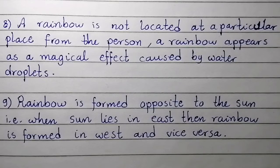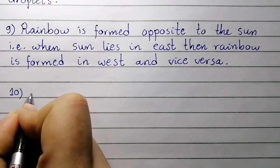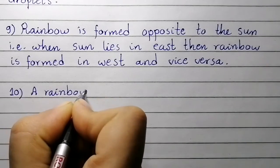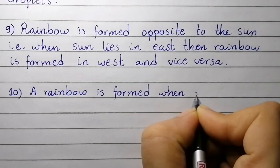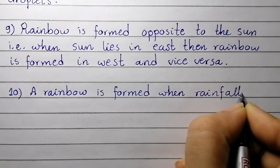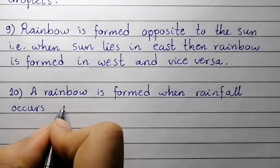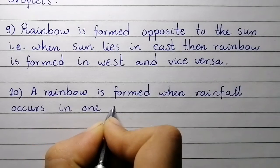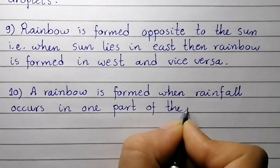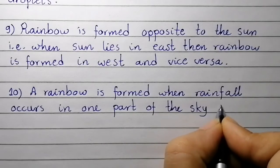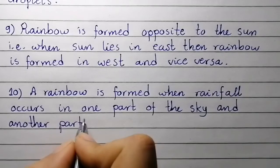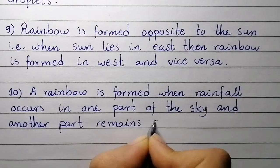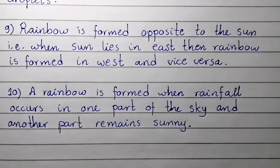Point number ten: a rainbow is formed when rain occurs in one part of the sky and another part remains sunny.